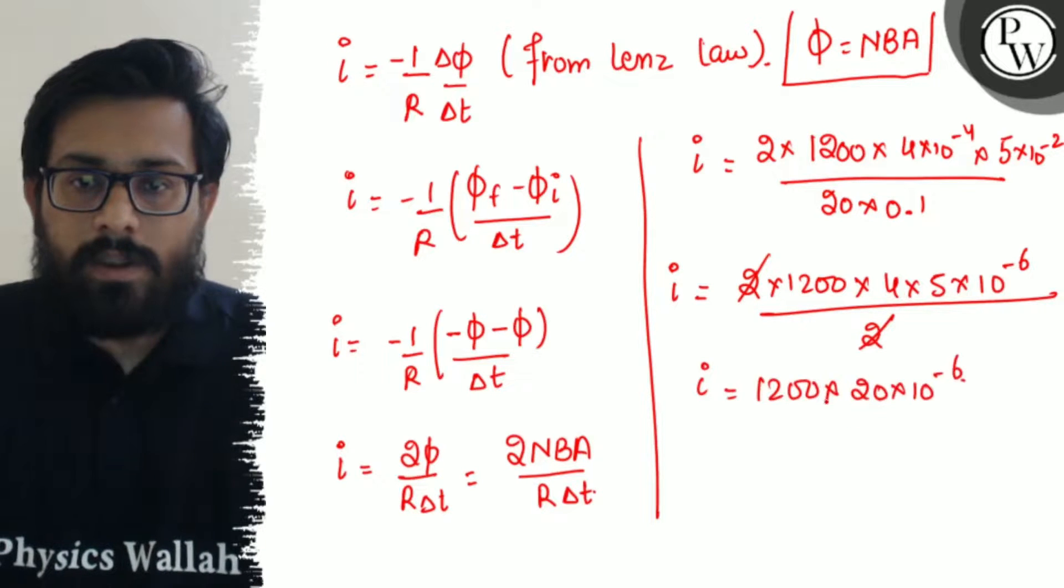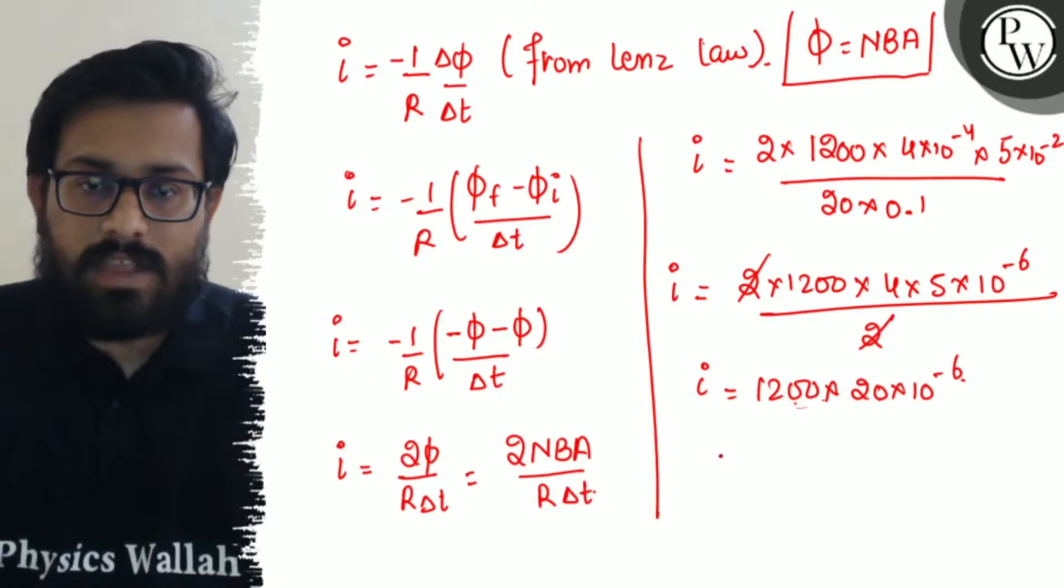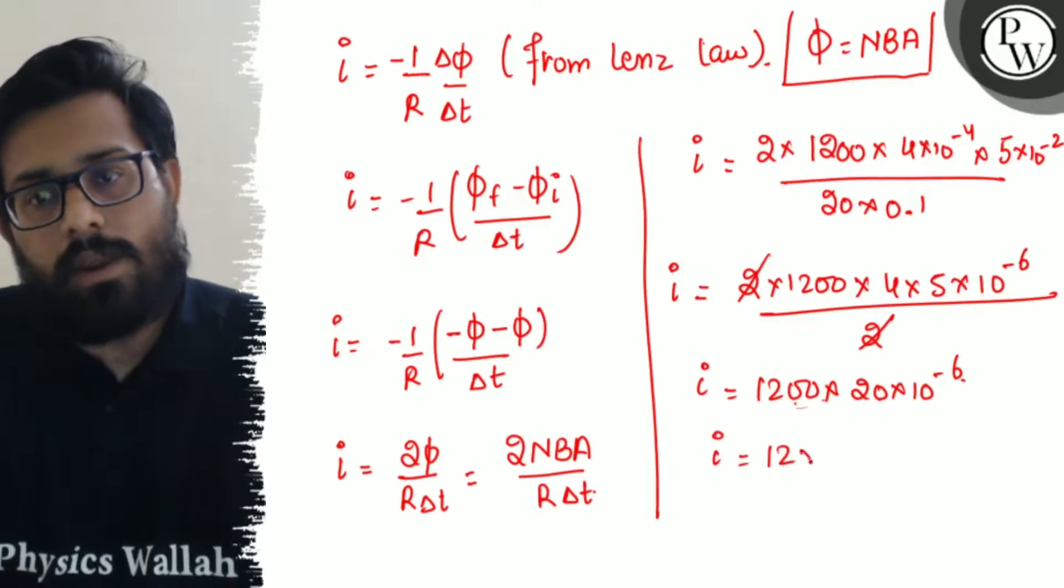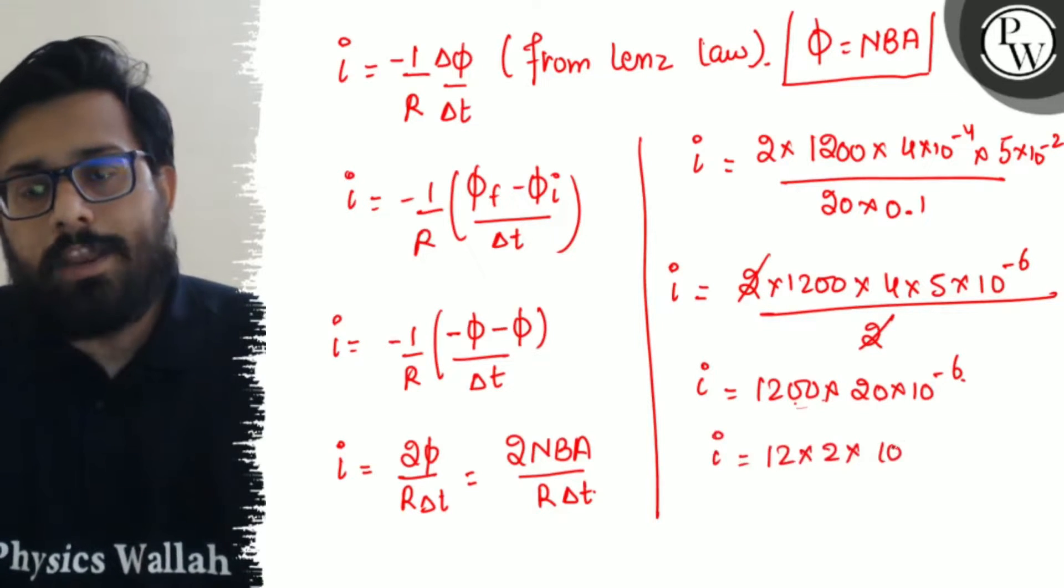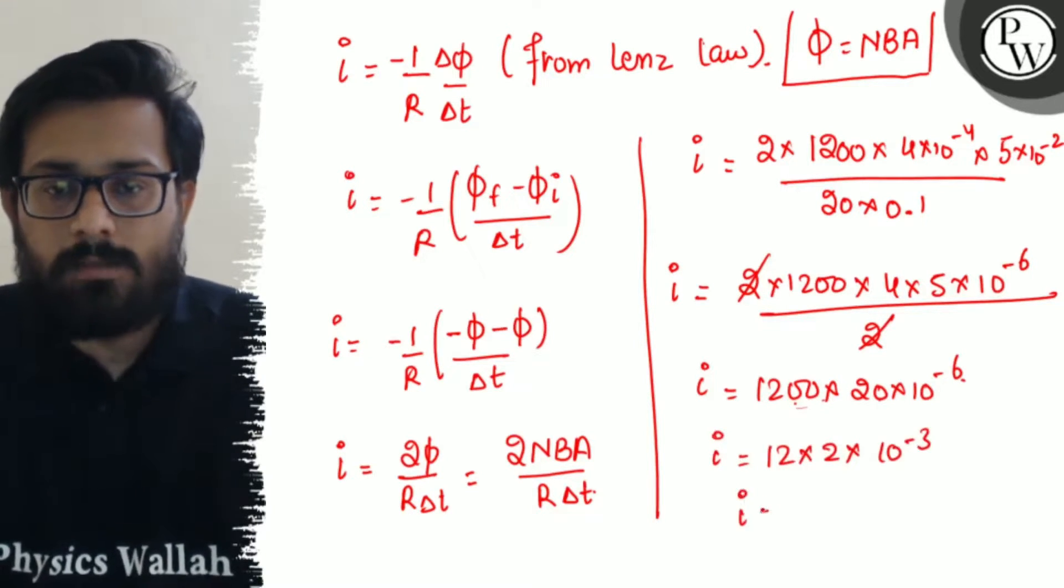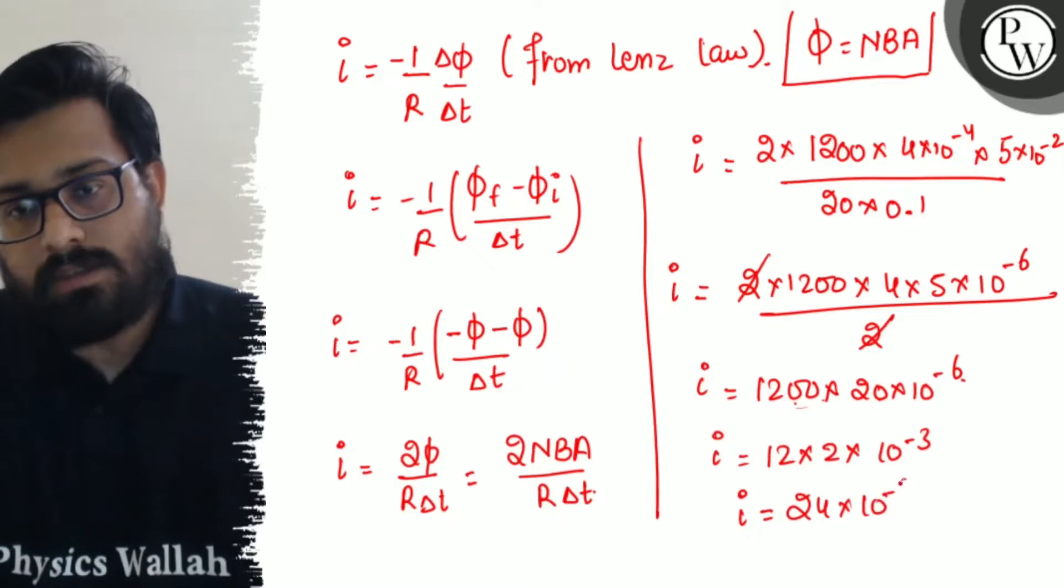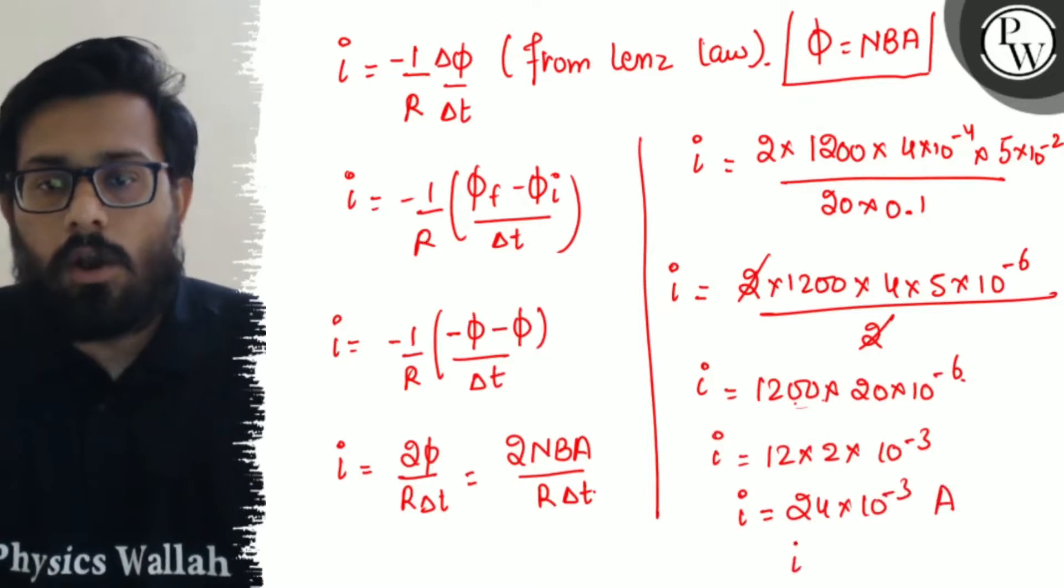Three zeros cancel out. 12 × 2 × 10⁻³. So i comes out to be 24 × 10⁻³ ampere.